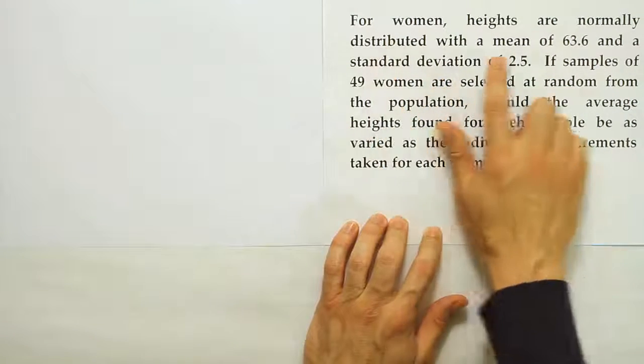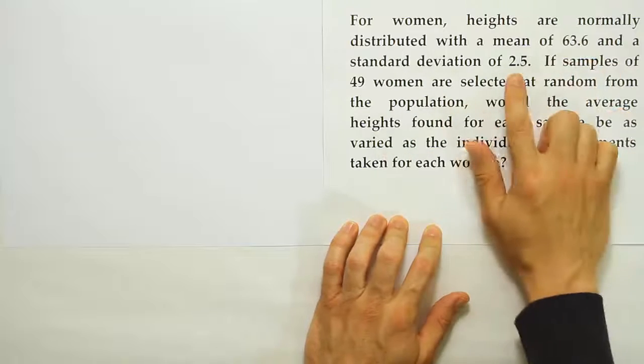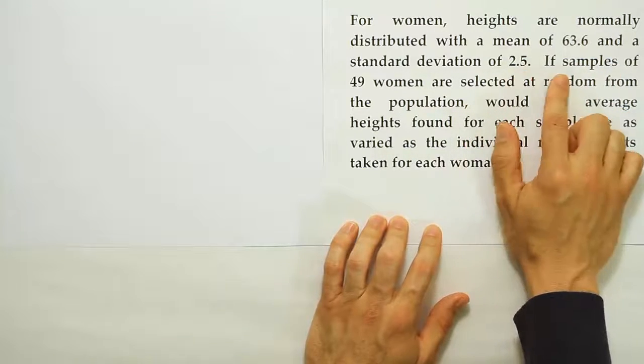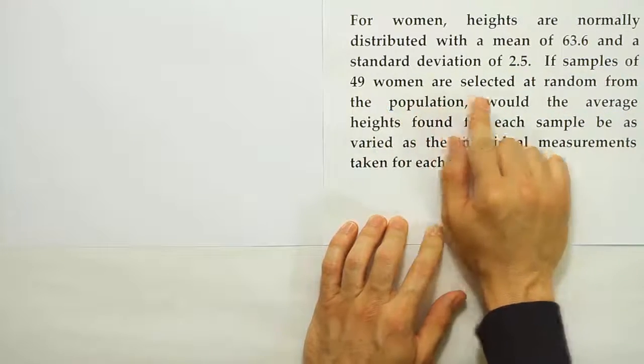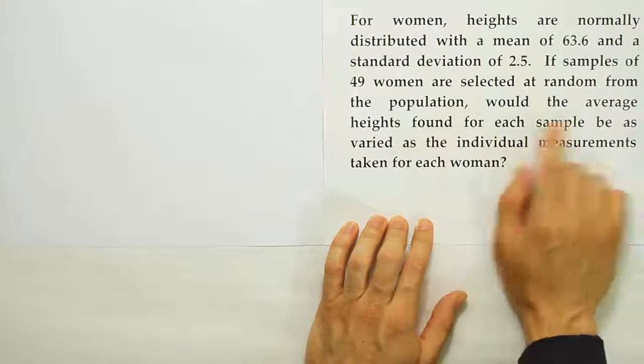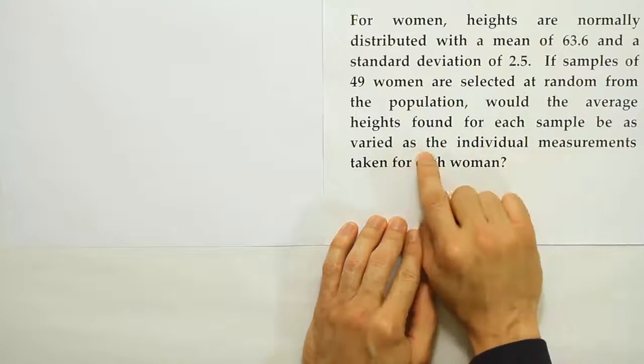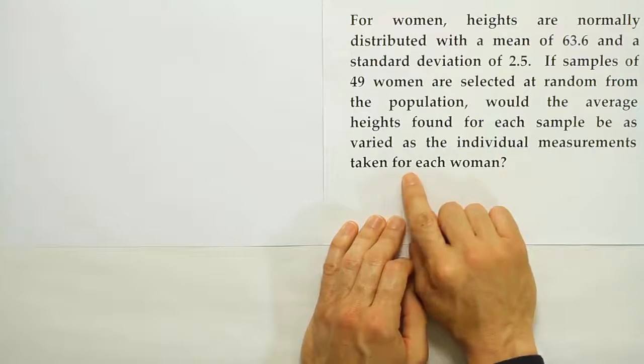For women, heights are normally distributed with a mean of 63.6 and a standard deviation of 2.5 inches. If samples of 49 women are selected at random from the population, would the average heights found for each sample be as varied as the individual measurements taken for each woman?